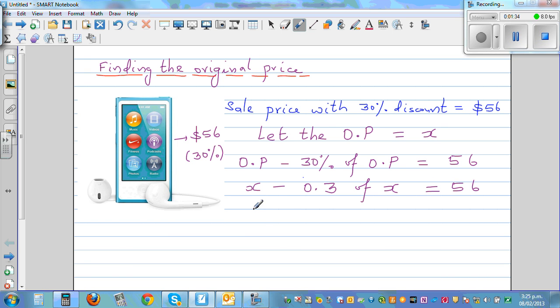30% as a decimal is 0.3, so X minus 0.3X equals 56. This is the same as writing 0.7X equals 56.